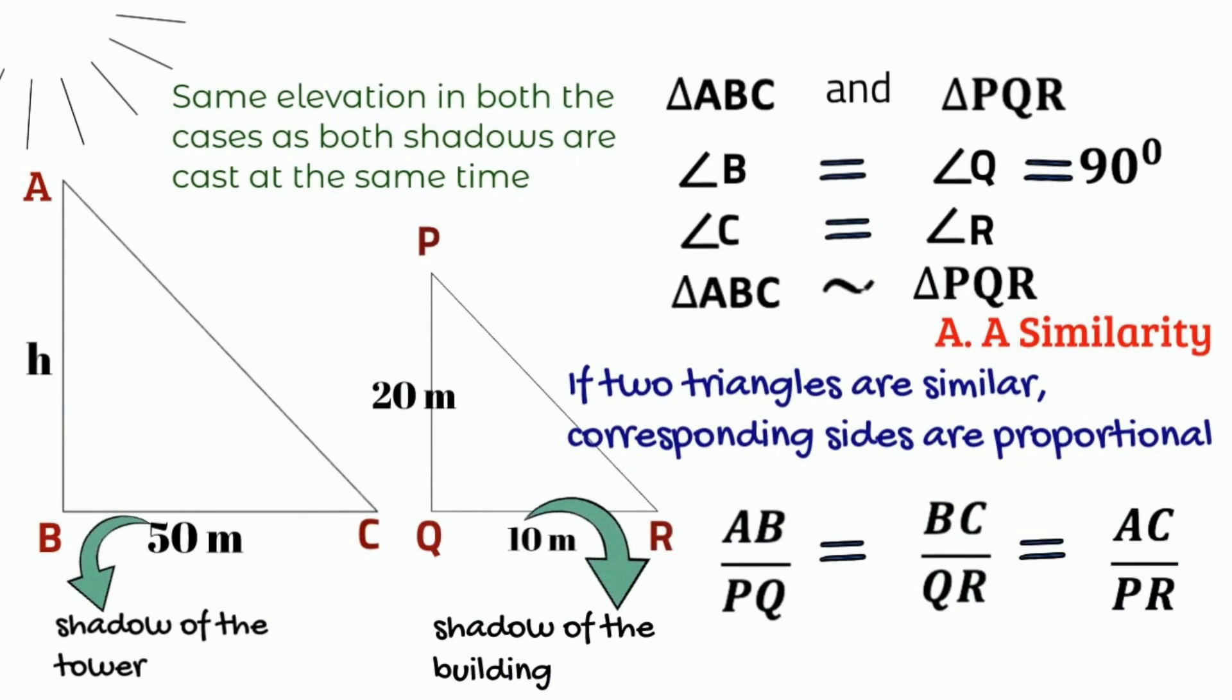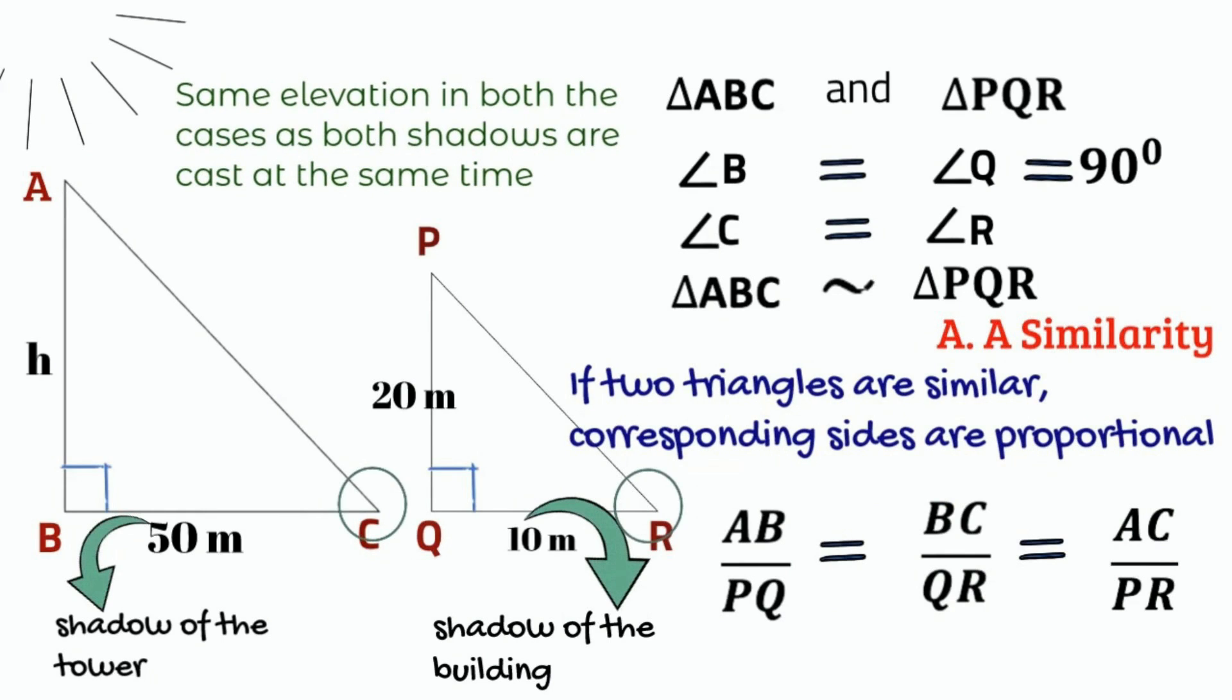So, AB by PQ equals BC by QR equals AC by PR.